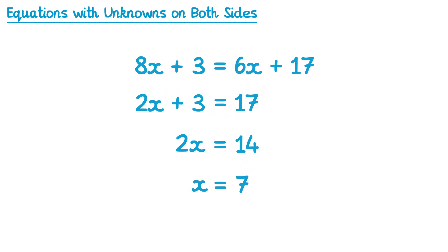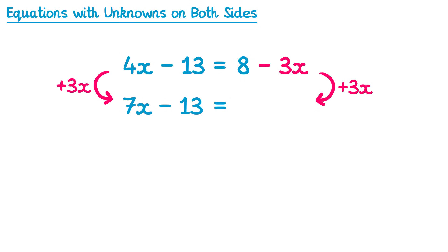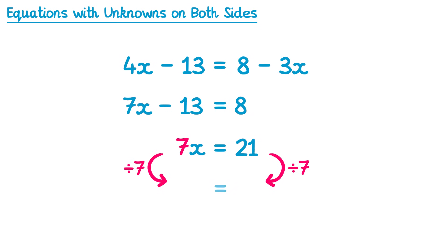Next we'll look at another equation that's slightly different in structure. This time we have 4x on the left-hand side and negative 3x on the right-hand side. Remember we said you want fewer x's on the right-hand side — negative 3x is actually smaller than 4x, so this does work. But to eliminate a negative 3x, we're going to need to add 3x to both sides, and that's different to all of the questions we've done so far. On the left-hand side, 4x plus 3x is 7x. Then we have the negative 13, and on the right-hand side, negative 3x plus 3x is 0, so those terms cancel and we're left with 8. We add 13 to both sides: the 13s cancel on the left, leaving 7x, and on the right 8 plus 13 is 21. Then we divide both sides by 7: 7x divided by 7 is 1x, and 21 divided by 7 is 3. So the solution is x equals 3.